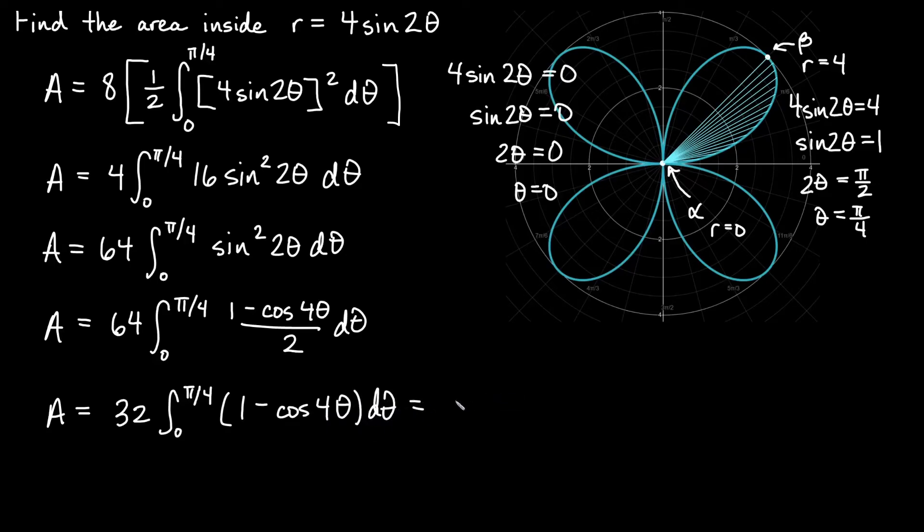Let's evaluate this. We will get 32. The integral, if we're integrating d theta, one becomes theta. If we integrate cosine 4 theta, the antiderivative of cosine is sine, so we'll get sine 4 theta. But since we're doing the antiderivative, reciprocal of four comes out. So we get minus one fourth sine 4 theta. We'll evaluate that from zero to pi over four.